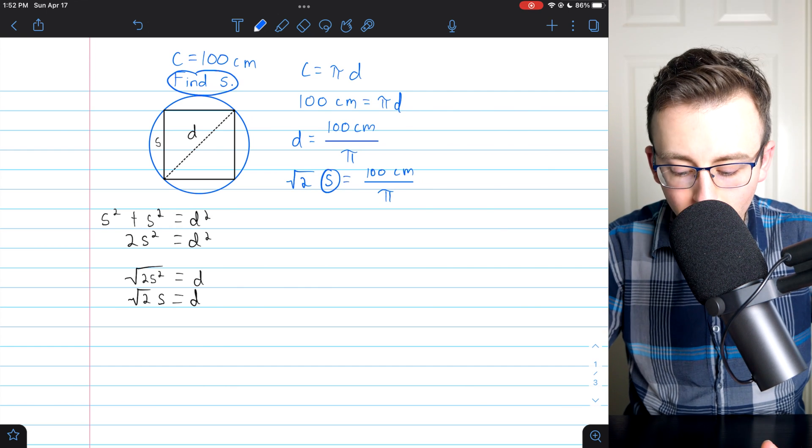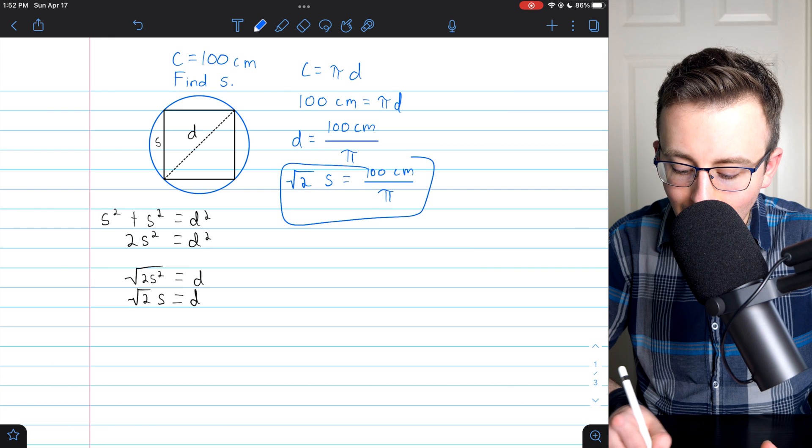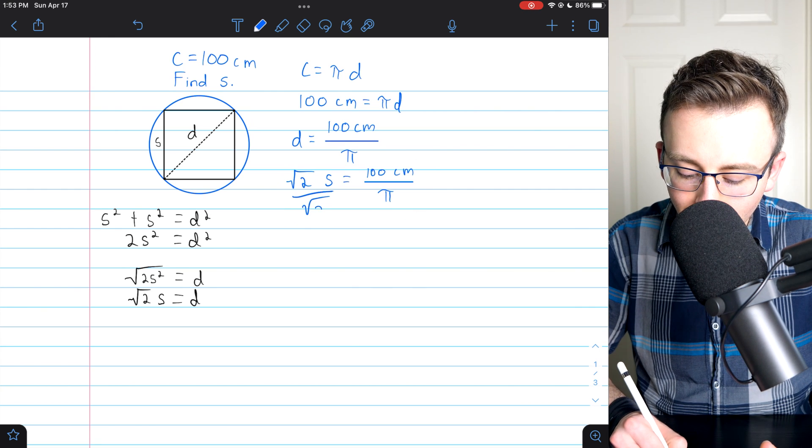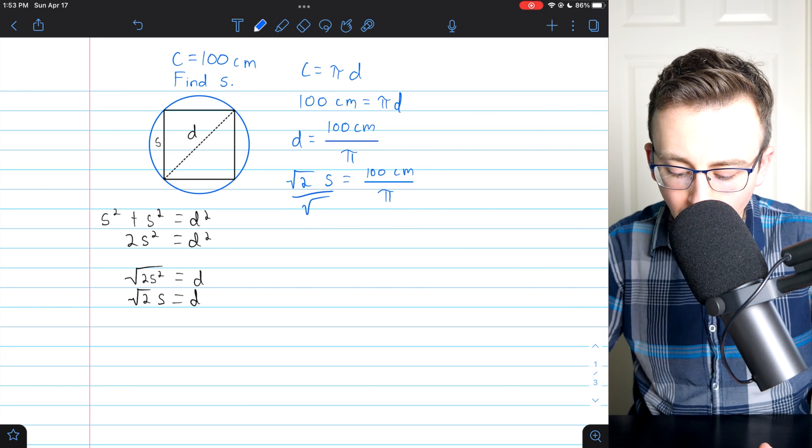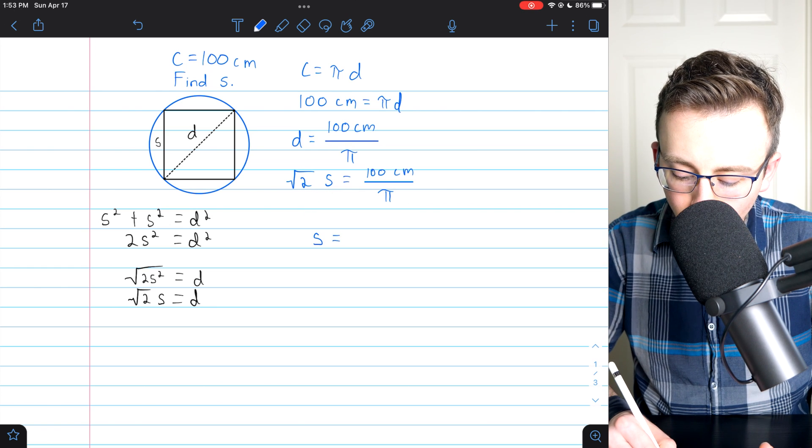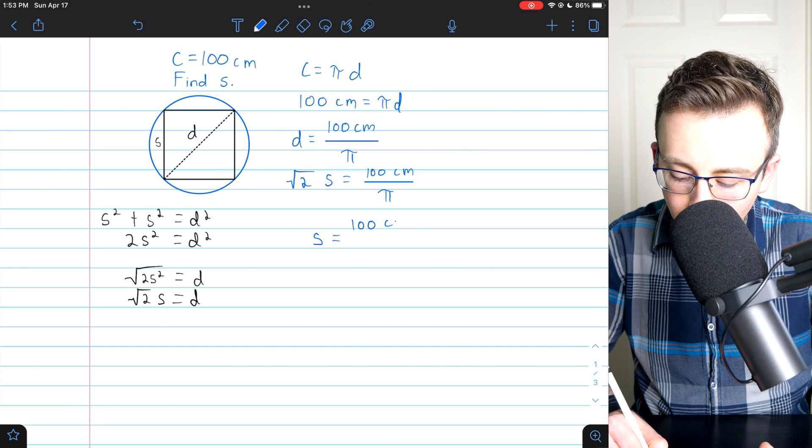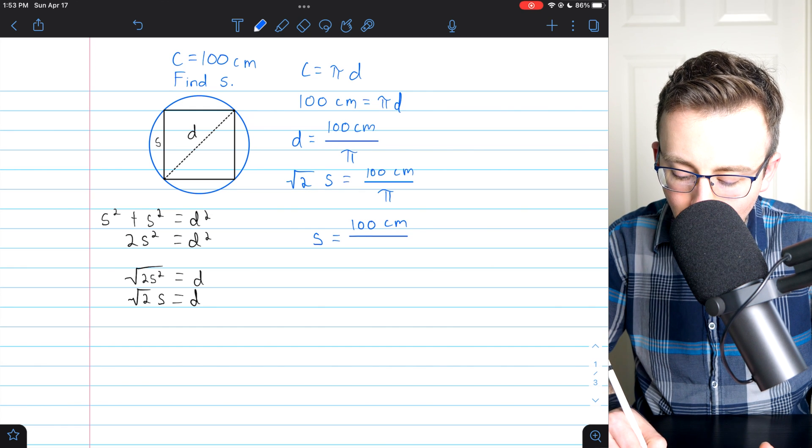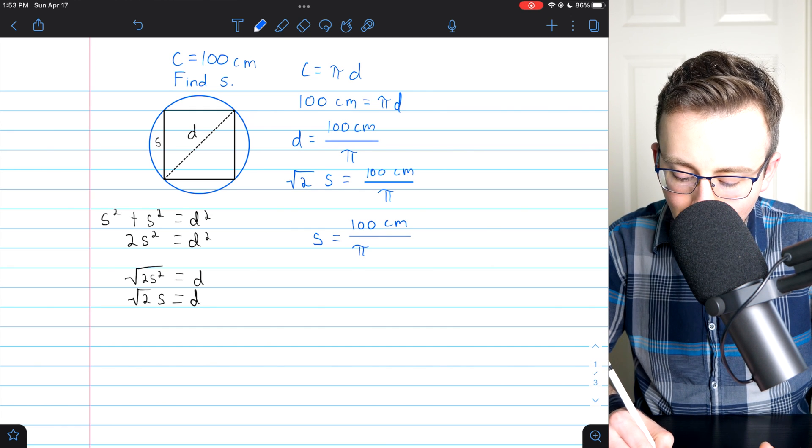That's the whole goal here. So let's solve this equation for s by dividing both sides by square root of 2. Doing that is going to give us that s is equal to 100 centimeters divided by pi times the square root of 2.